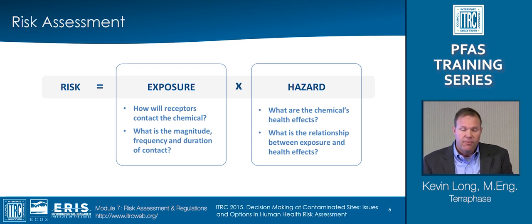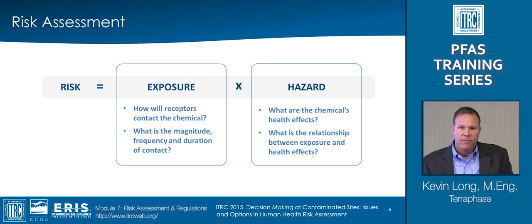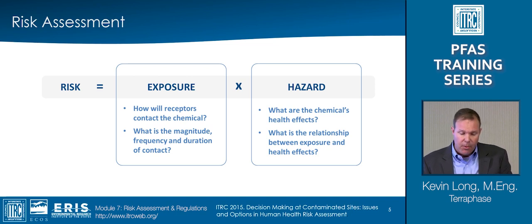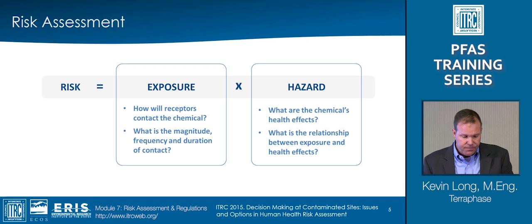The exposure component involves a determination of how individuals might come into contact with a dangerous agent and at what magnitude, frequency, and duration. The hazard part involves a determination of what the potential health effects might be in the event of exposure to that hazardous agent. The hazard component also involves quantifying the relationship between the amount of exposure and the health effects associated with that exposure — this is often called the dose-response relationship.